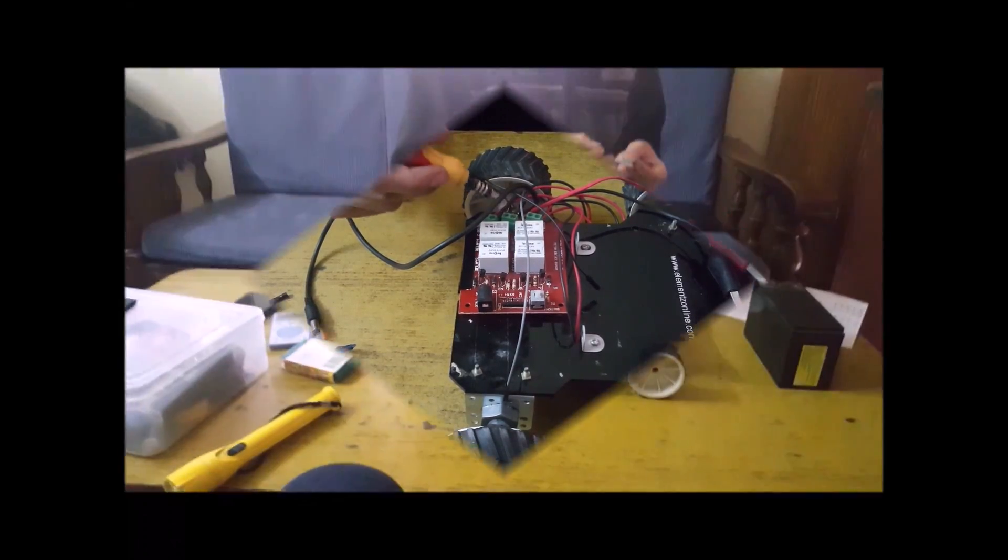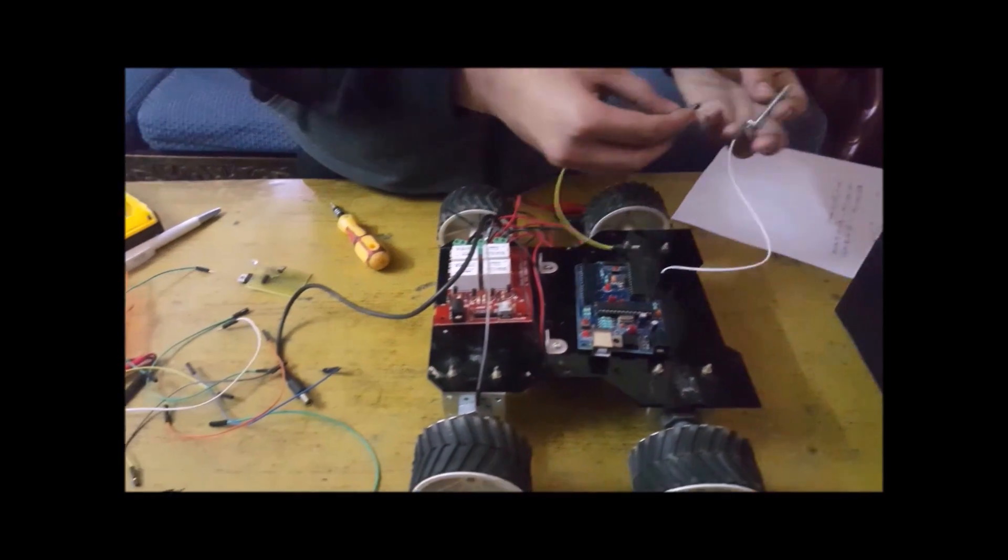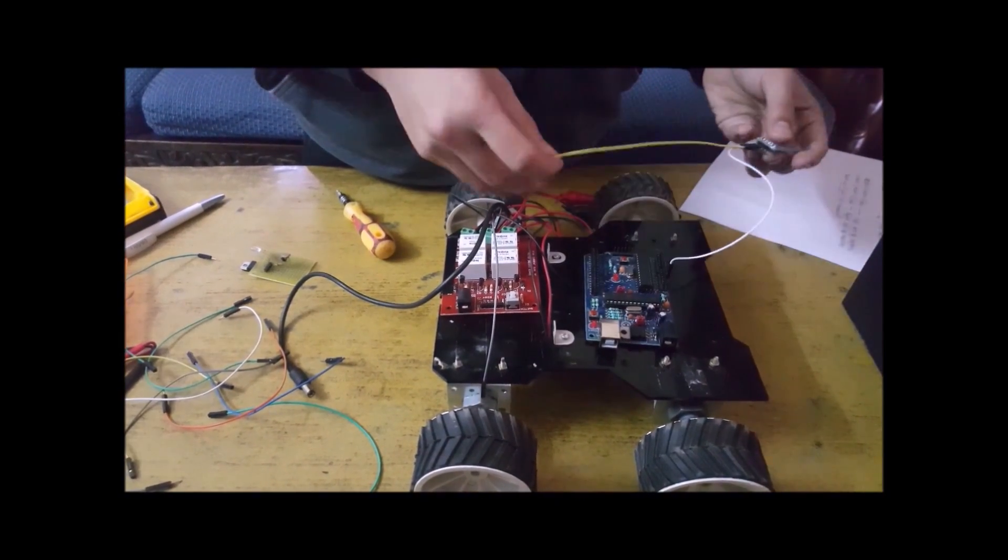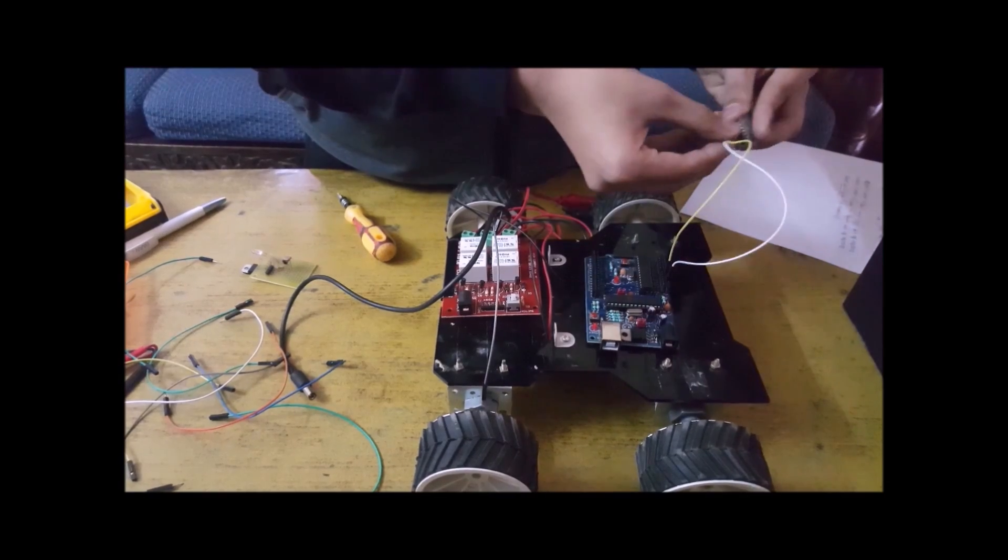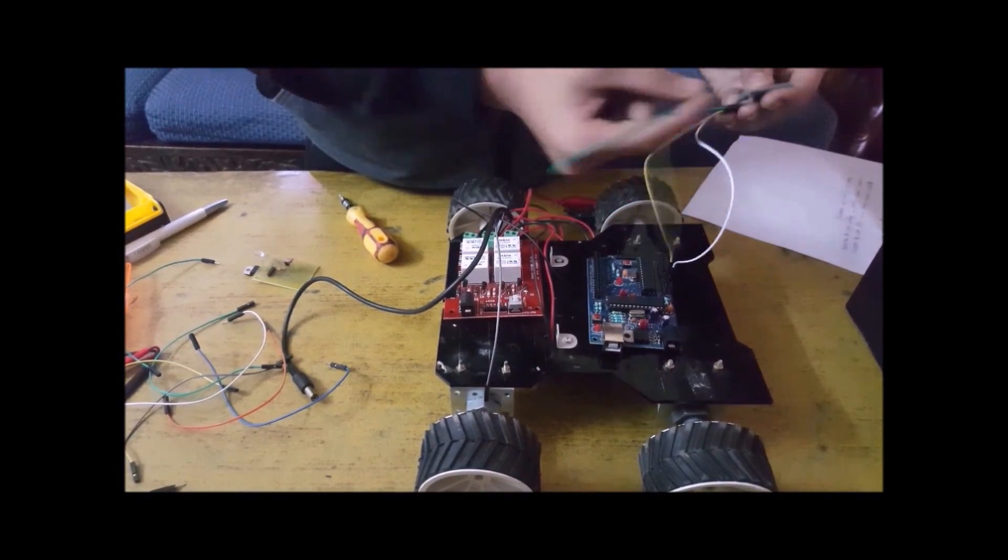Now connect the Bluetooth RX pin to the digital pin 13 of the Arduino. Connect the TX pin to the digital pin 2. Bluetooth VCC to the 5V on the Arduino and GND to the GND on the Arduino.